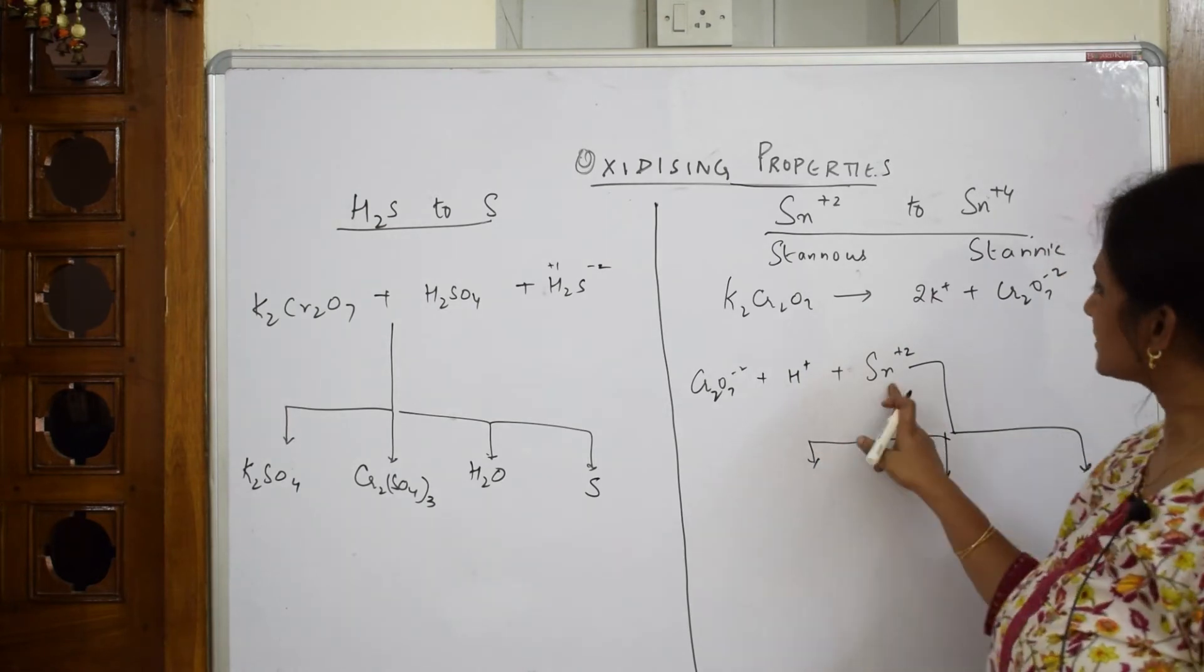Now I said this is an oxidizing agent. Let's see what products we are going to get. Important. First I said stannous gets oxidized to stannic. So Sn²⁺ becomes Sn⁴⁺.